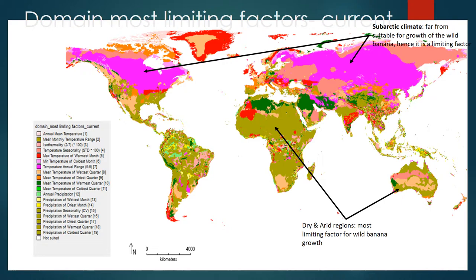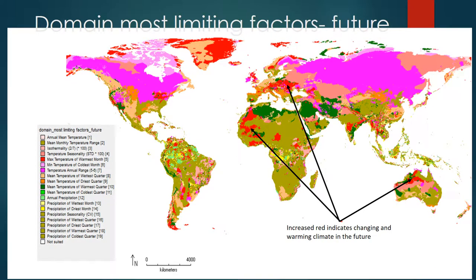Looking at the future distribution: this map represents the global distribution of the Musa Balbusiana in the future climate, based on the bioclimatic model. The majority of predicted surface distribution still occurs near the equatorial belt, mostly in Central Africa, large parts of South America and Southeast Asia. However, more importantly, there is a decrease in distribution surface evident in the future climate. Upon closer regional analysis, one can spot a reduction in predicted surface distribution areas such as South America, Central Africa and marginally in Southeast Asia.